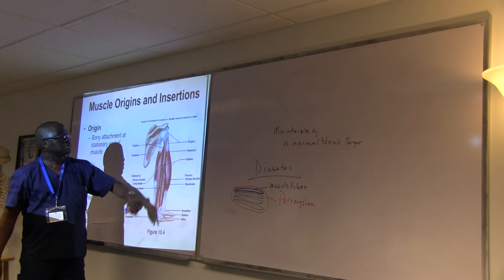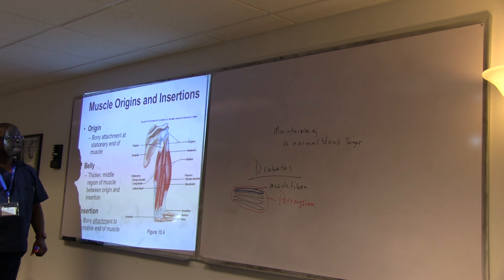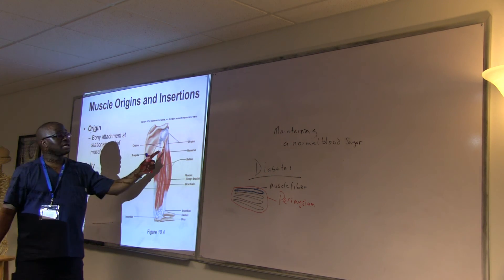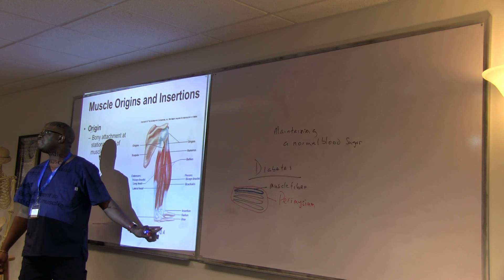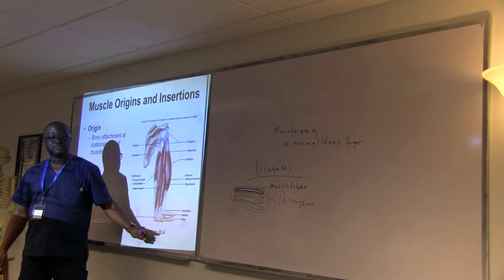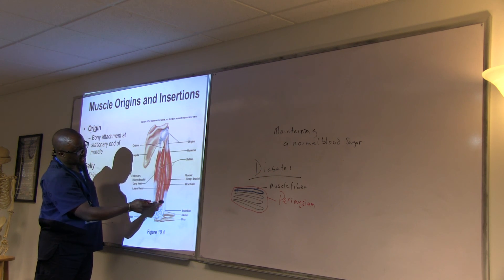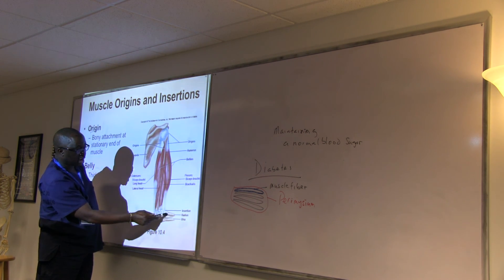So in the diagram that you have there, like for instance, the bicep. There's tendons on both sides, but how do you tell which one is origin, which one is insertion? It looks like it's from both sides. Good question. Alright? So the way you're going to tell this, where is the action taking place? For instance, it's coming from this part of the humerus. The bicep gets attached to the radius.